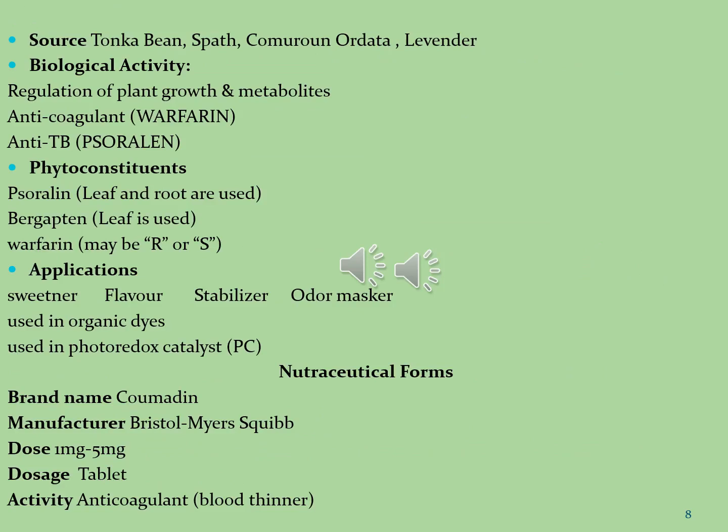Some other sources from which coumarin molecules are isolated include tonka bean, spath coumarin, and lavender. Coumarins have biological activities: they are used for regulation of plant growth and metabolites, as anticoagulants (warfarin), and anti-TB (psoralen). Other phytoconstituents include psoralen found in the leaf and root of plants, and bergapten found in the leaf of plants. Other applications include use as excipients, flavour stabilizers, odour maskers, organic dyes, and photoredox catalysts.